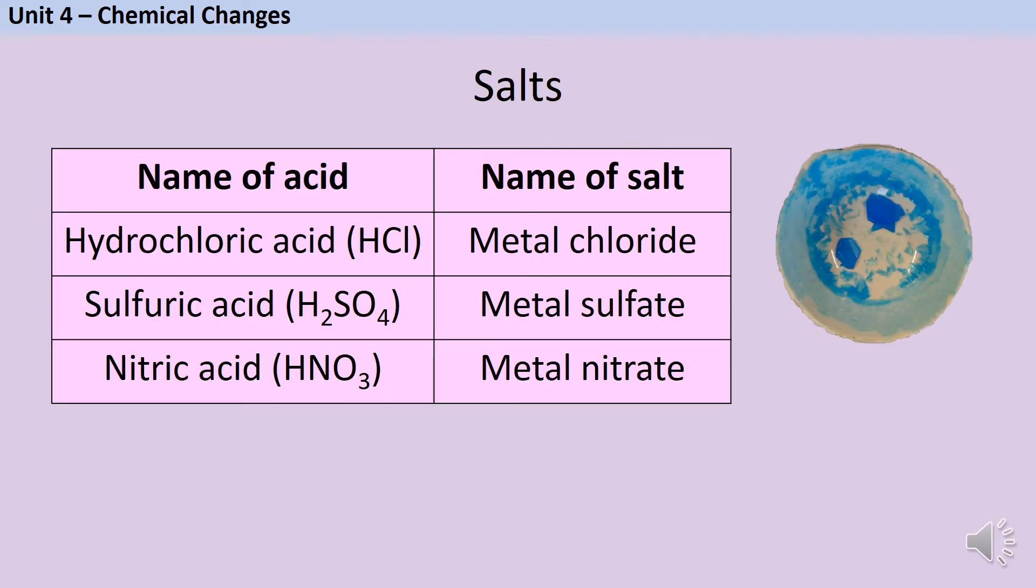Salts are compounds made when a metal or a base reacts with an acid. Their name has two parts, like a first name and a surname. The first name comes from the name of the metal. The surname comes from the name of acid.